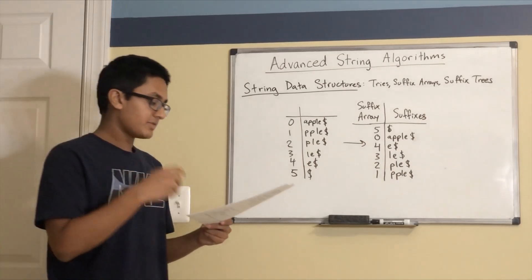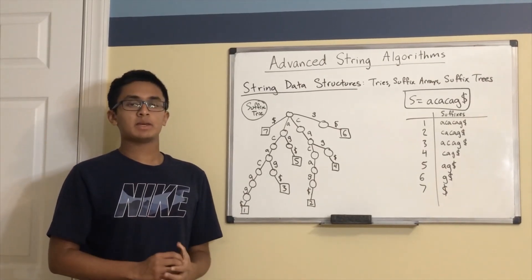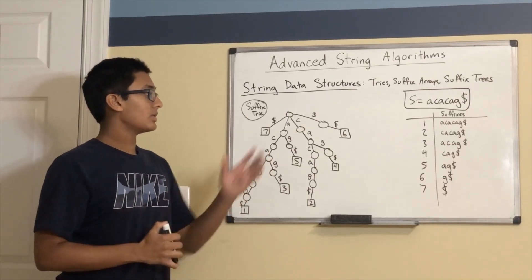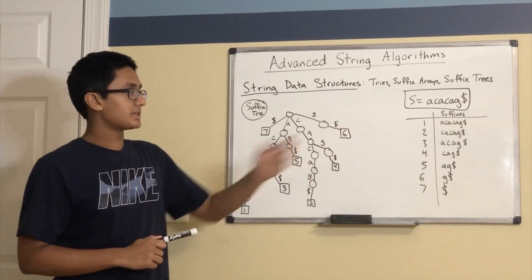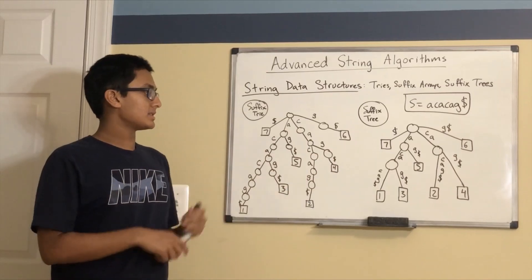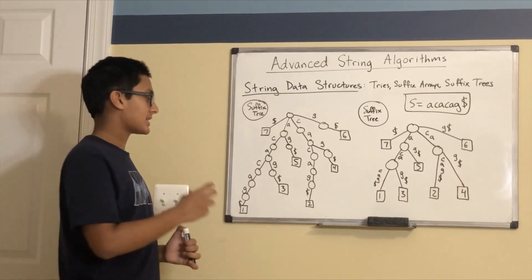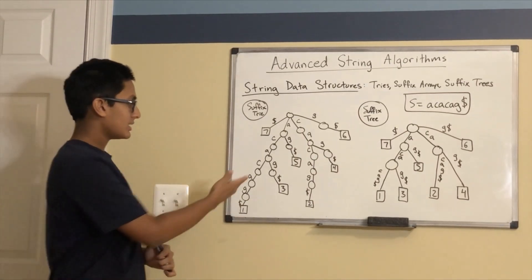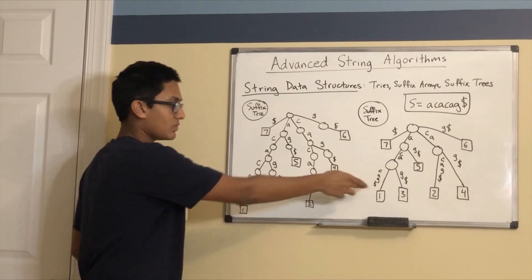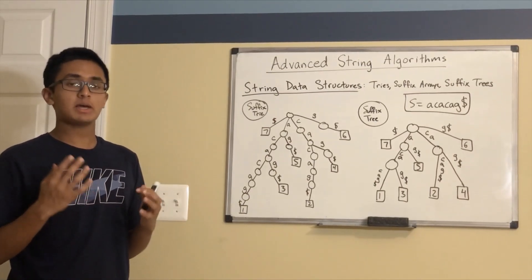A trie built from suffixes is known as a suffix tree, and we'll cover that next. A suffix trie is essentially a trie of all the suffixes of a string. For the string A, C, A, C, A, G, the suffix trie would contain all suffixes as paths. A suffix tree is derived from the suffix trie by combining all nodes that contain only one child. For example, the branch C, A, G, and dollar sign — with those being the labels of the edges — is combined into a single edge. This makes a suffix tree more compact and therefore makes computations on suffix trees much more efficient than on a suffix trie. Suffix trees are useful in a variety of optimization algorithms for common string problems, though they are tricky to implement in a contest setting.